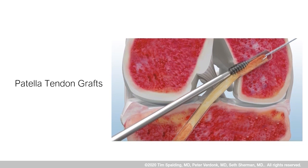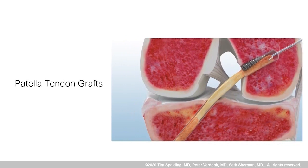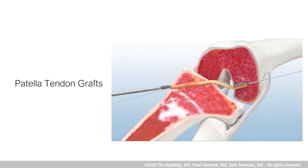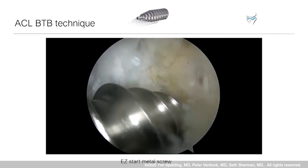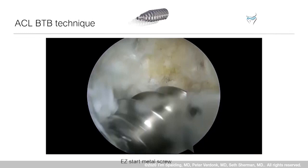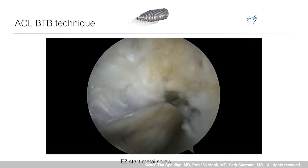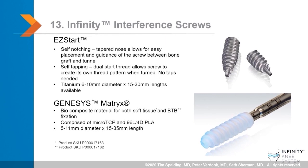Moving on to the patella tendon graft, this is fixed with the easy start screw. The screw is tapered at the tip to allow insertion without any need for tapping or making a pilot hole. The bone plug is then inserted into the femur, and because of the screw's shape it inserts easily without dilation. The easy start screw is self-notching and self-tapping, available in titanium, 6 to 10 millimeters diameter and 15 to 30 millimeter length. For the absorbable option we use the Genesis matrix biocomposite screw.